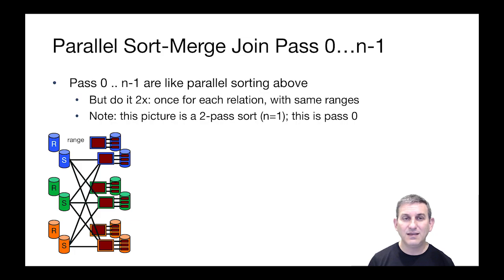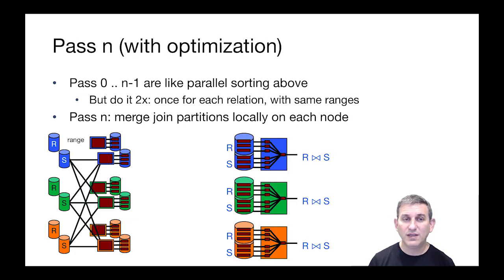Now to do a join, we're going to do the same thing, but we're going to do it for both relations, generating runs for R and runs for S. And then locally, now that we've got the data range partitioned, we simply do the remaining pass of sort merge join locally, merging the join partitions on each node. And that's done without any communication.